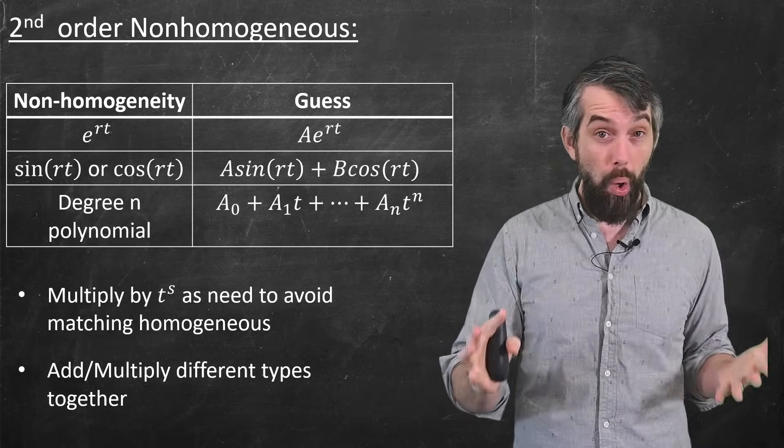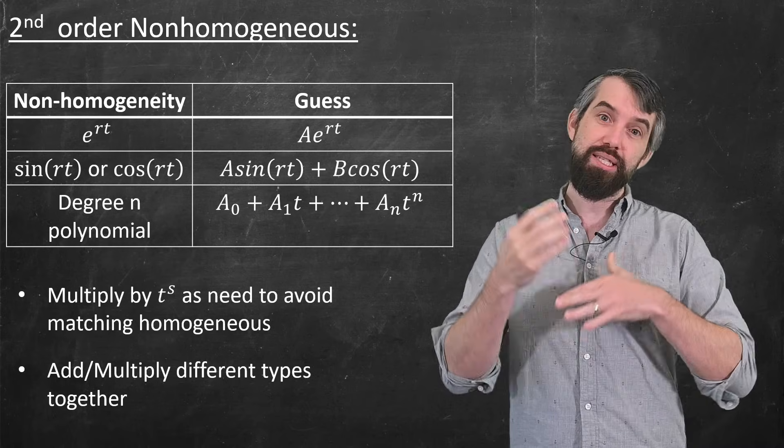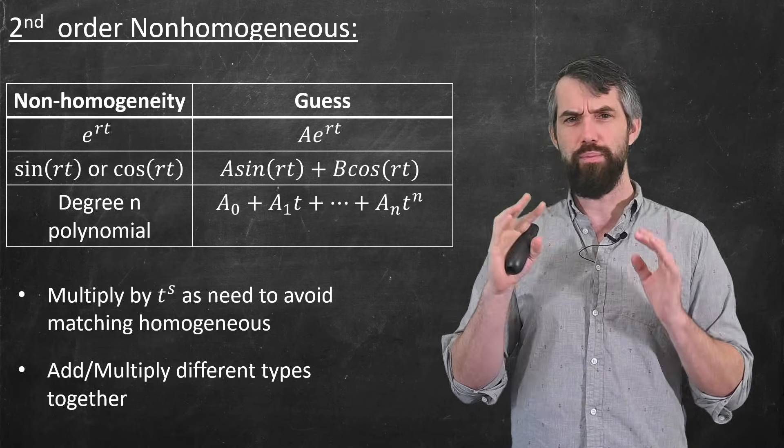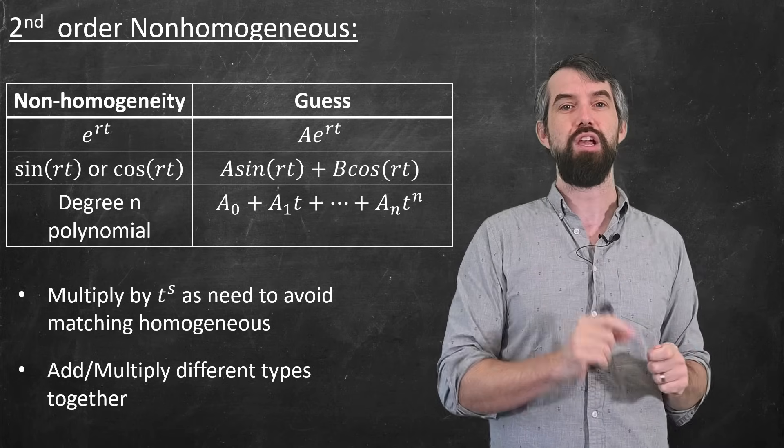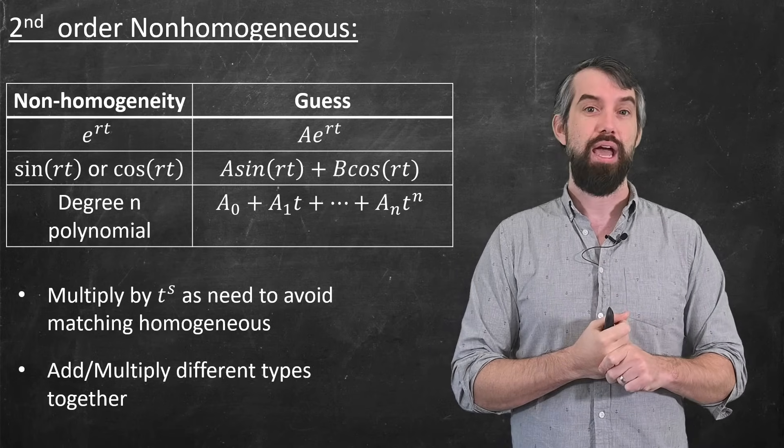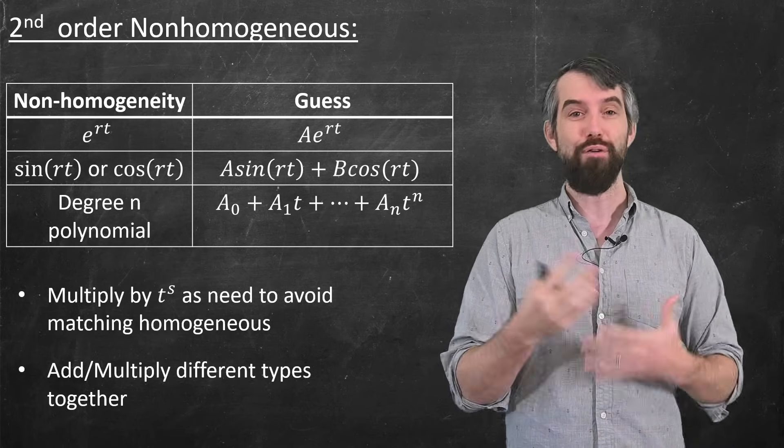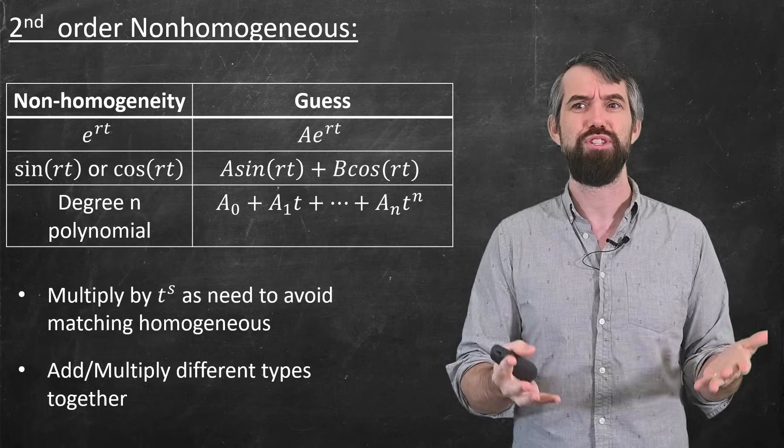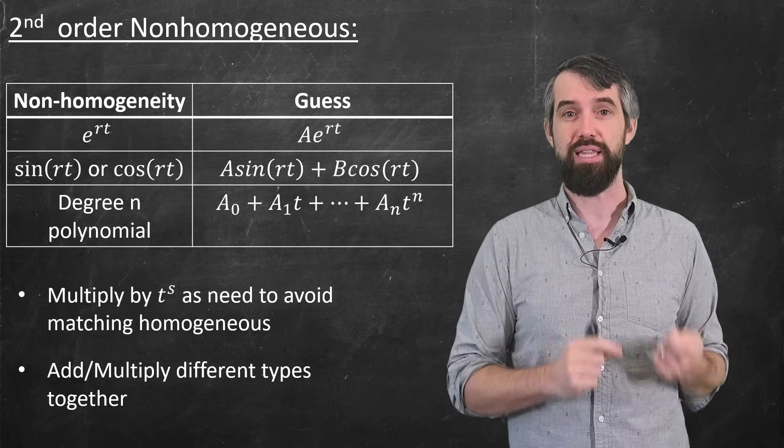It's worth noting this doesn't work for all inhomogeneities. There's a second method called variation of parameters. I won't show that in this video, but I will put a link down in the description and variation of parameters is often useful when you can't use undetermined coefficients because the nonhomogeneity isn't one of these things that's on this list.